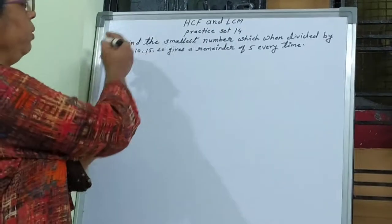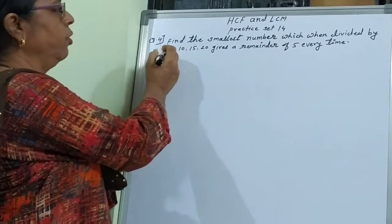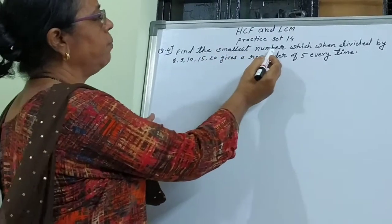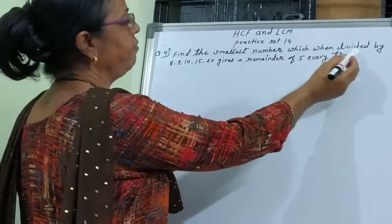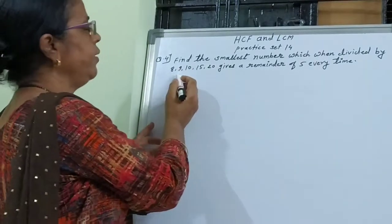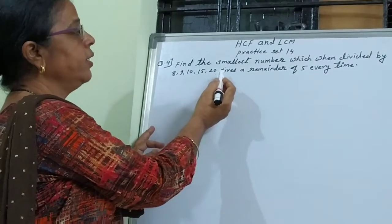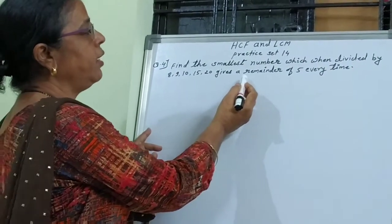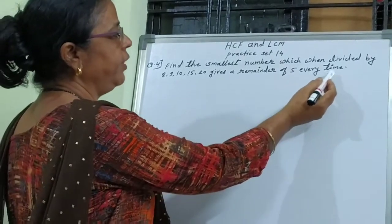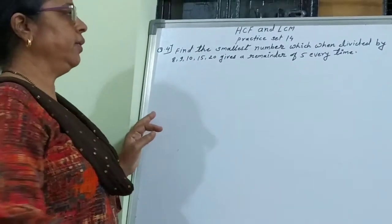Now we will move on to question 4. Find the smallest number which when divided by 8, 9, 10, 15, and 20 gives a remainder of 5 every time. What does it mean?